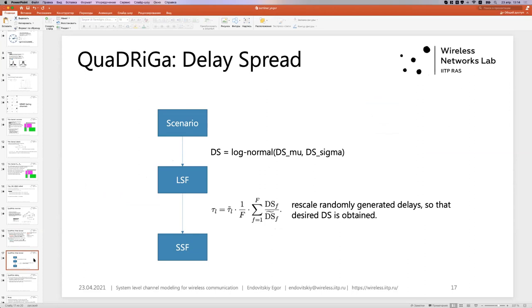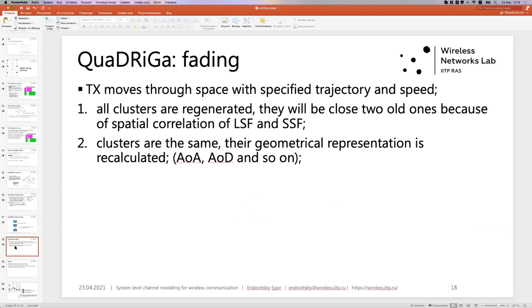So this is obtained from log-normal distribution using scenario parameters. It's a large-scale fading parameter. Then it is used to alternate randomly generated small-scale fading parameters, which are actually clusters. Clusters have some delay, which is tau. And this is summation over different carrier frequency. It's not important here. So Quadriga rescales randomly generated delays, so that the desired delay spread from large-scale parameters is obtained. So that was the spatial dependence part. But what about temporal fading?